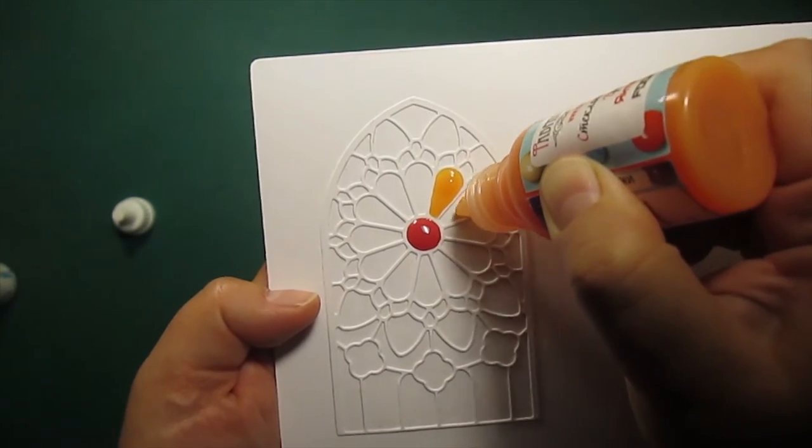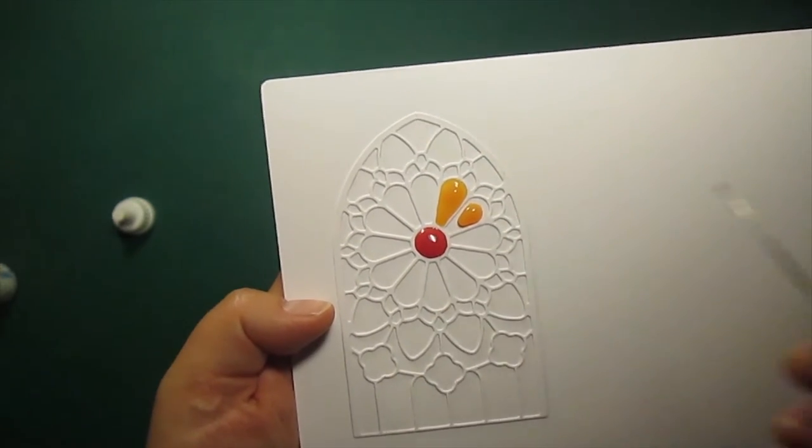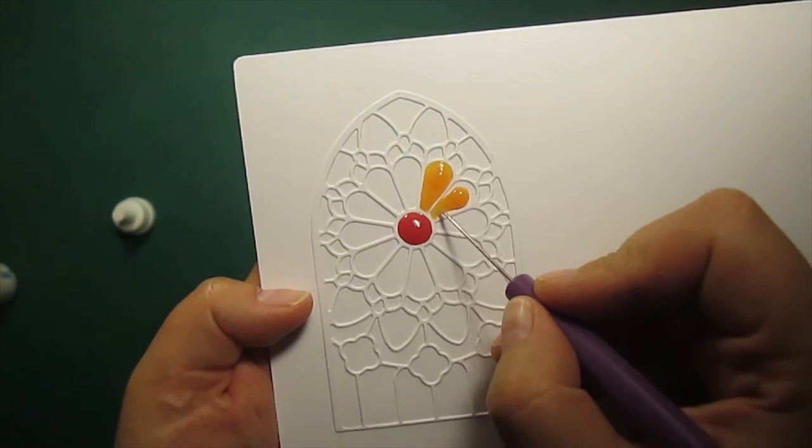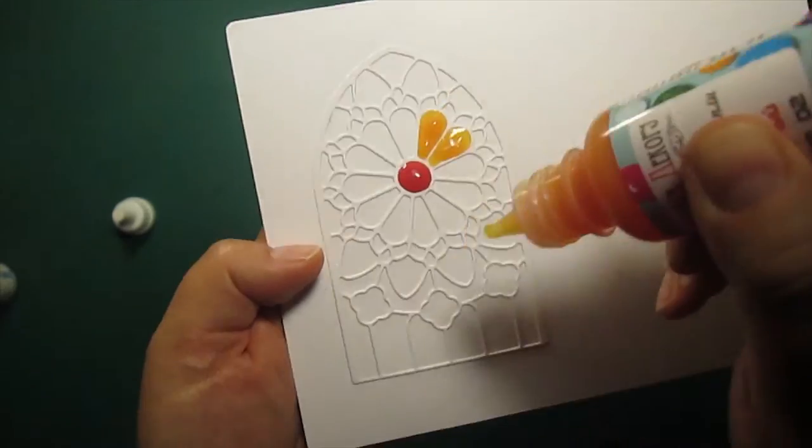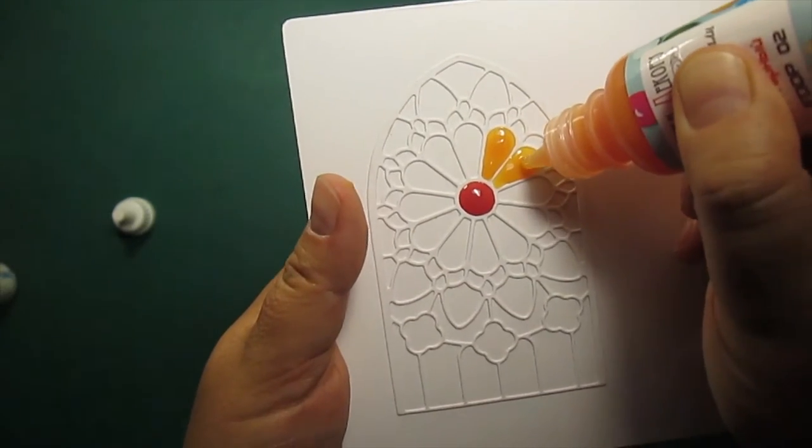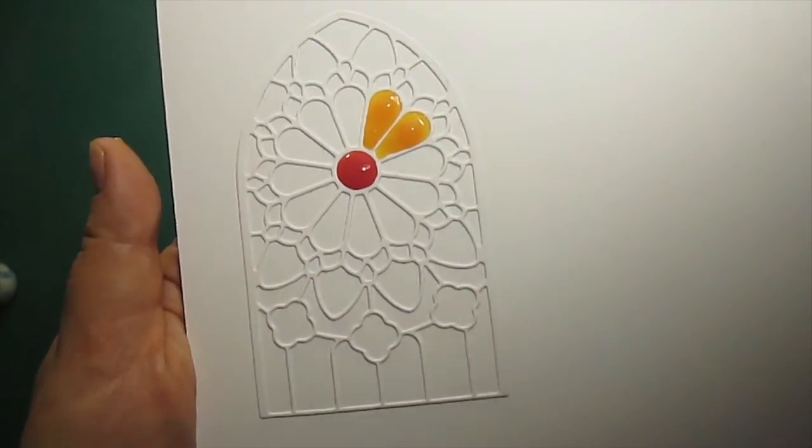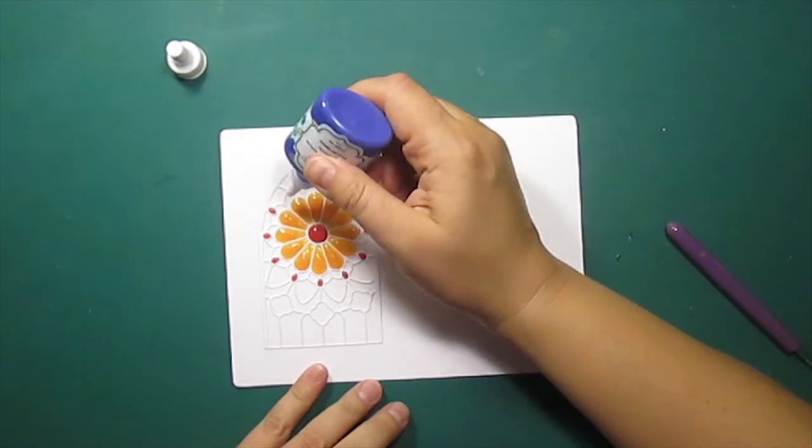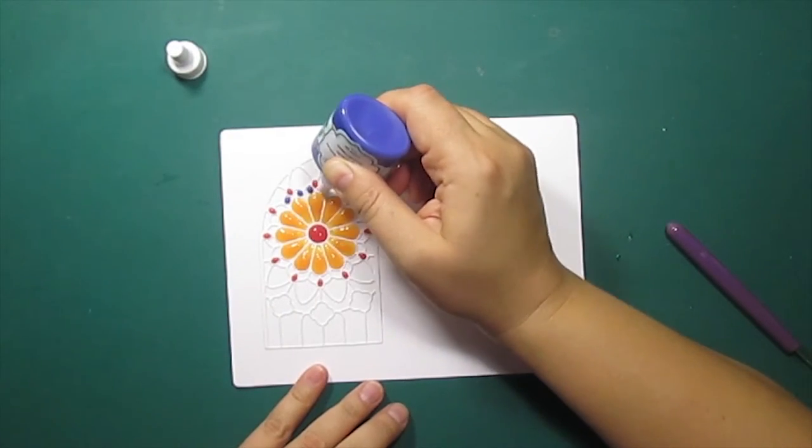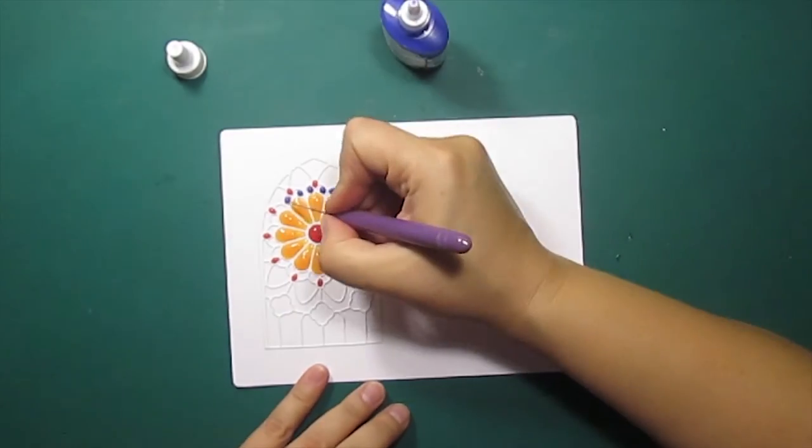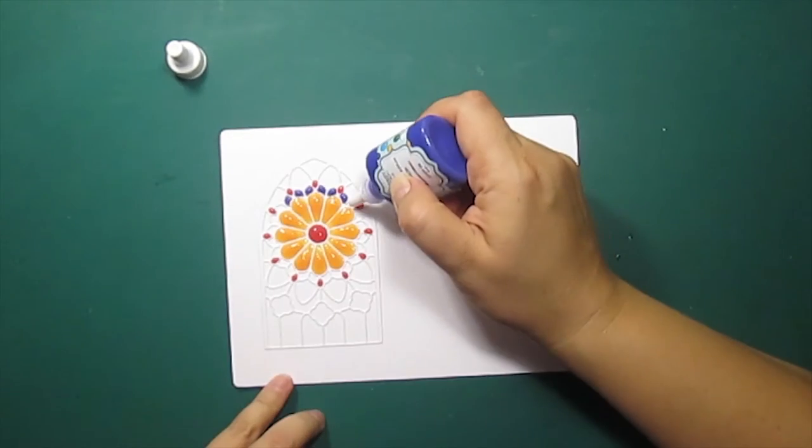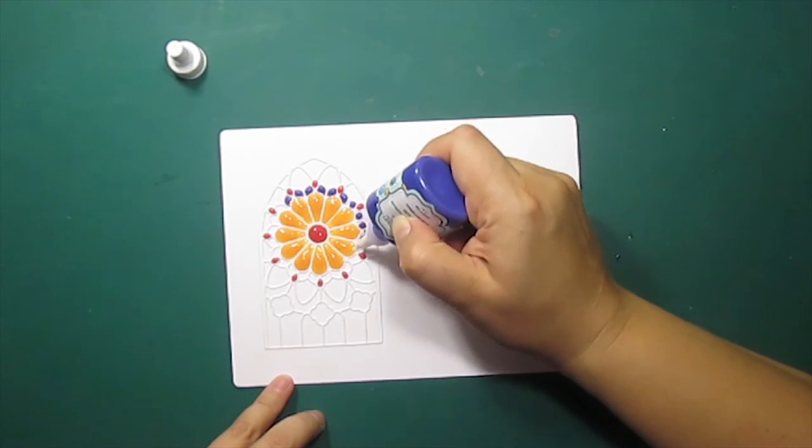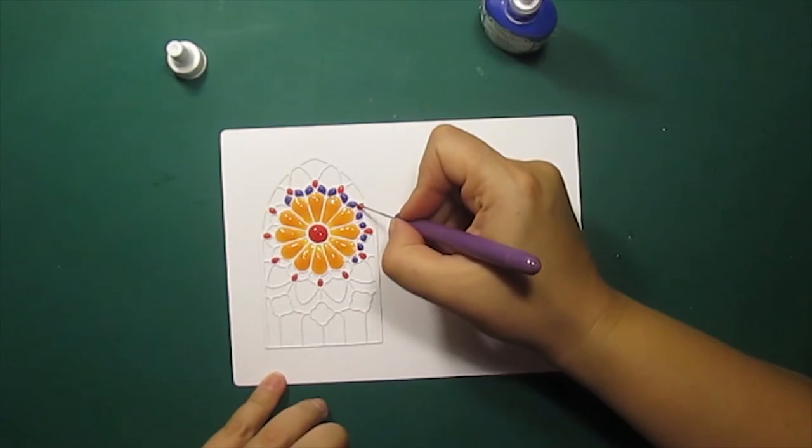I'll repeat the same steps with the next section. If there is an air bubble, I just pop it with the same tool. I keep adding more colors. This whole process is very similar to basic coloring. Any intricate dies will work for this technique. Just fill in the small sections with the colors that you like.